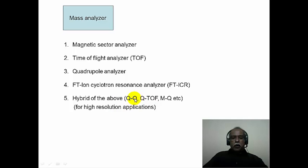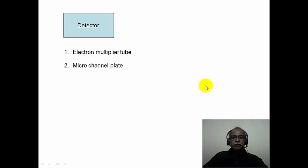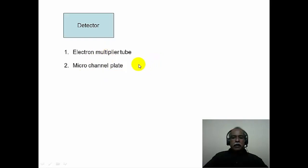For example, one can have a quadrupole-quadrupole, triple quadrupole, or quadrupole time-of-flight analyzer. Such combinations are generally used when high resolution is necessary. The detectors used are essentially electron multiplier tubes or micro-channel plates. Ions impinge on the electron multiplier tube, producing a current that is registered as a signal corresponding to the recorded mass spectrum.